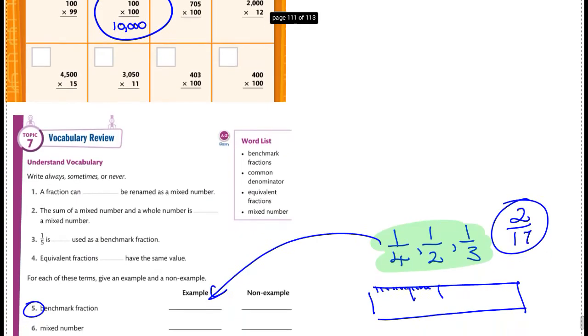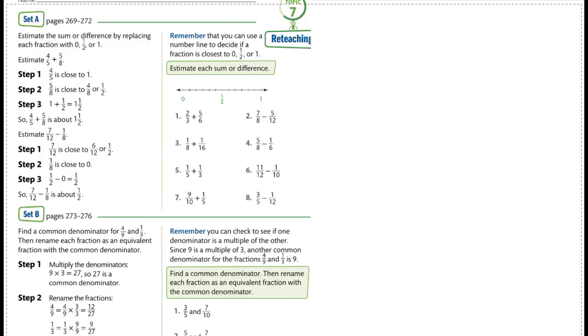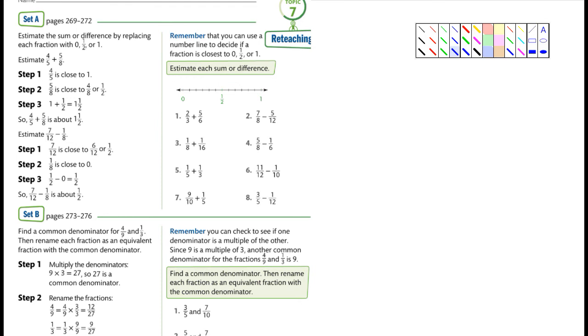So let's go to the next page. That is set A. I'm on page 319 now. And for set A, it says, remember that you can use a number line to decide if a fraction is closest to zero, one half, or one. This is what they're talking about right here. Zero, one half, or one.